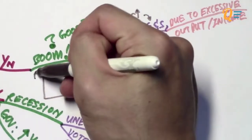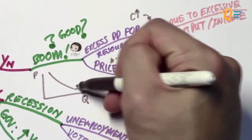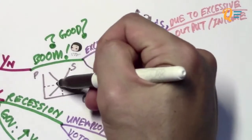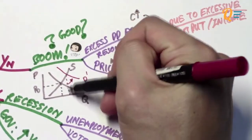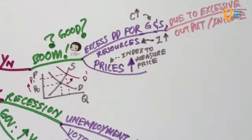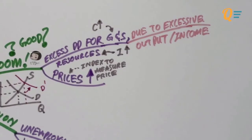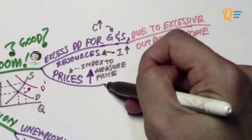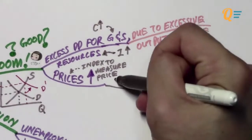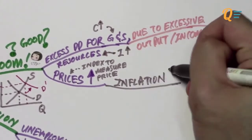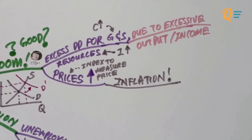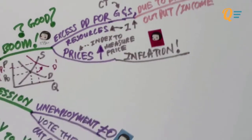When prices rise, we're referring to prices in general. Every country has a price index that measures the general price level — people take a basket of goods and services like transport, housing, and food, average their prices, and call that the price index. Looking at a price versus quantity graph: when demand increases while supply remains constant, the demand curve shifts right, causing price to increase from P0 to P1. This increase in price is known as inflation.